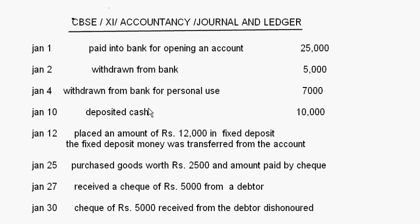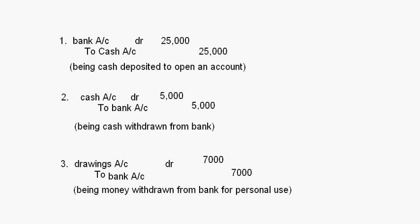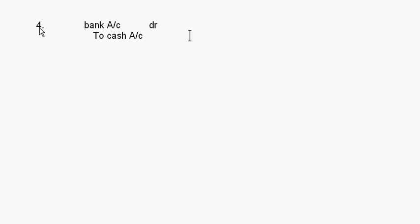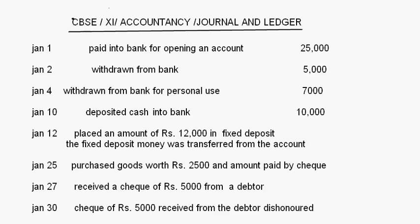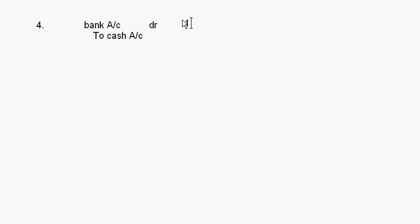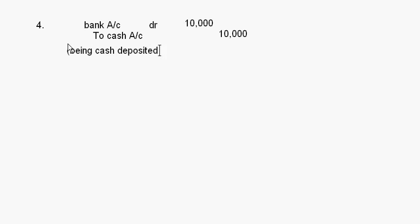The fourth transaction: deposited cash into bank, 10,000 rupees. When you deposit cash into bank, the amount in the bank is increasing — bank is receiving the money — and depositing cash means cash is going out of your hands. So bank account debit to cash account, the amount was 10,000 rupees, being cash deposited into bank.